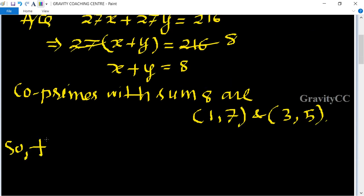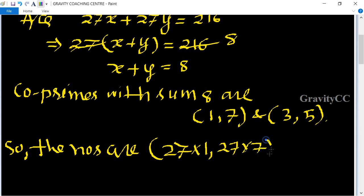So the numbers are 27 multiply 1 comma 27 multiply 7, and 27 multiply 3 comma 27 multiply 5.